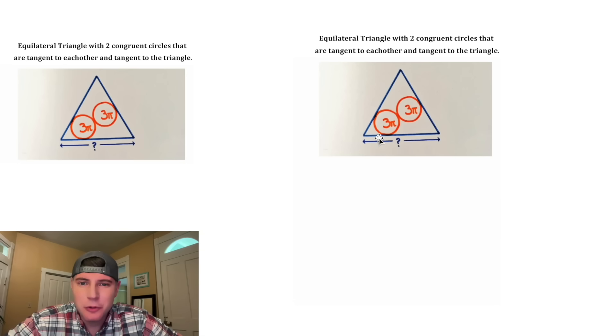Hey guys, this looks like a fun one. We're given an equilateral triangle with two circles that are tangent to each other and tangent to the triangle. And our goal is to find out what is the side length of the equilateral triangle.